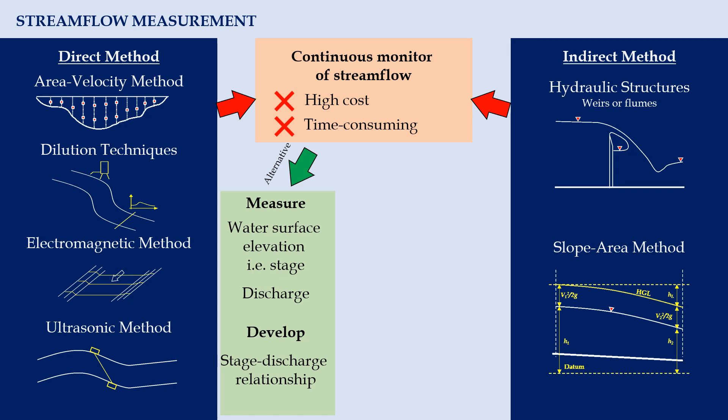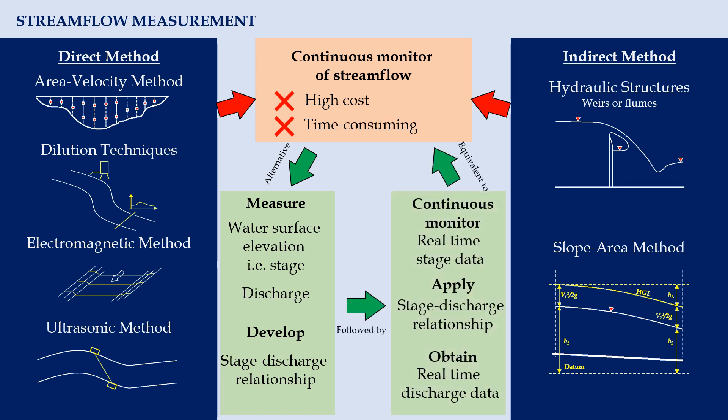In the first step, we obtain data on stream discharge and water surface elevation, which is also known as stage, through rigorous measurements. Once we have the data, we can derive the stage-discharge relationship of a stream. With this correlation, we can estimate the stream discharge by knowing the stage.